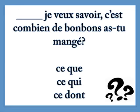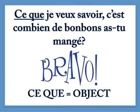Here's one where we put it at the beginning of the sentence. [Relative pronoun] je veux savoir, c'est combien de bonbons as-tu mangé? — 'What I want to know is how many candies did you eat?' How would you say 'what'? Bravo if you said ce que, because you need an object here — the subject je is already present. Ce que je veux savoir, c'est combien de bonbons as-tu mangé?